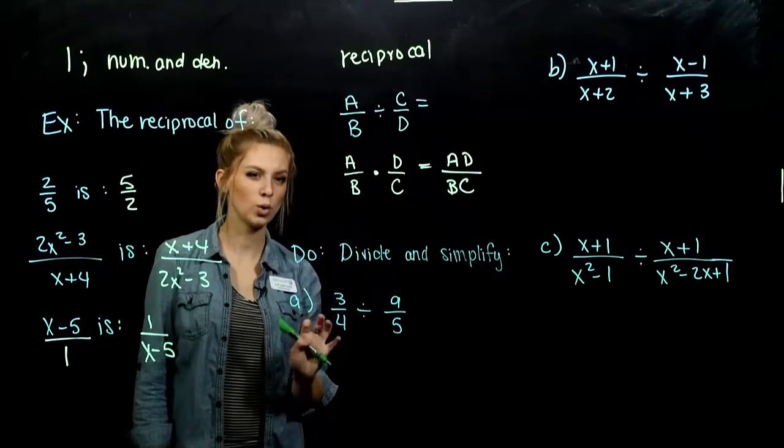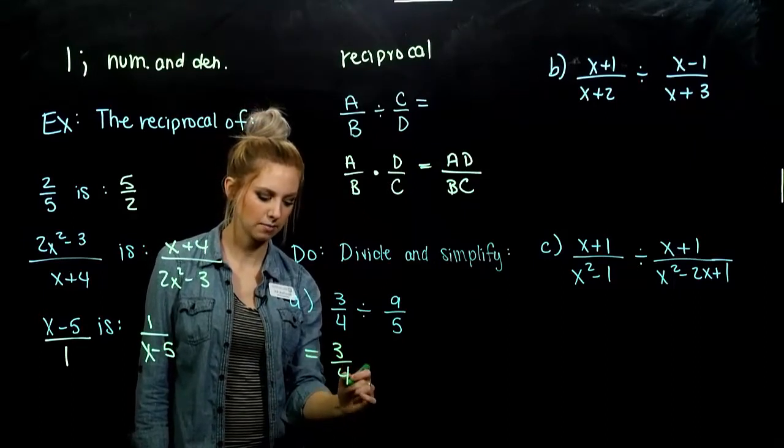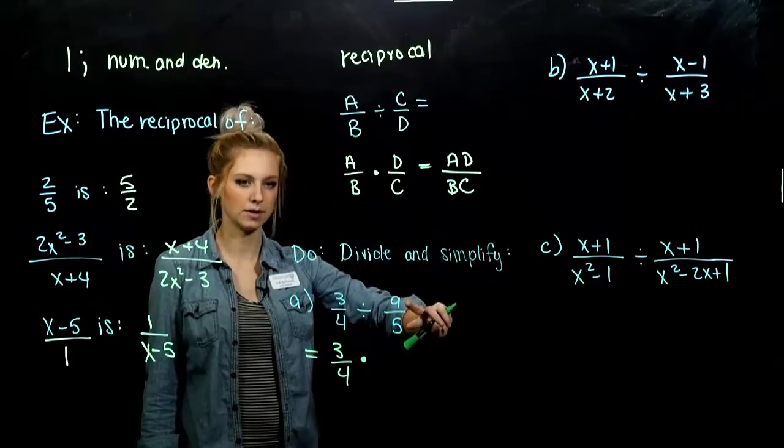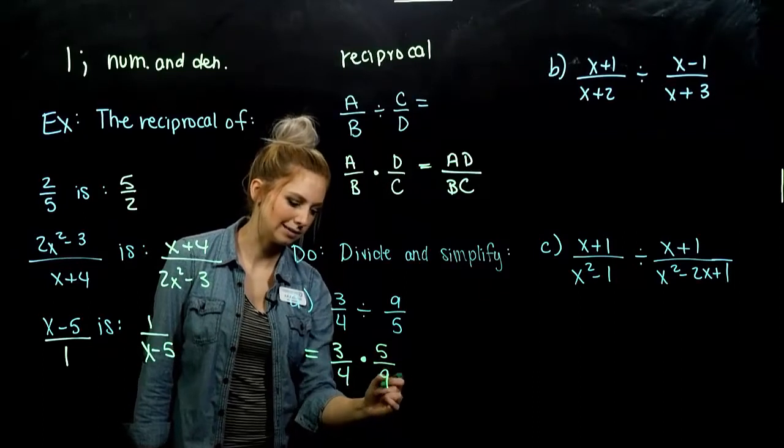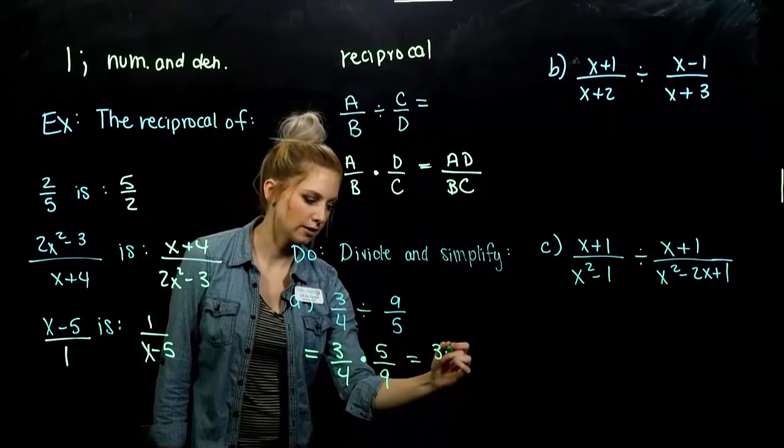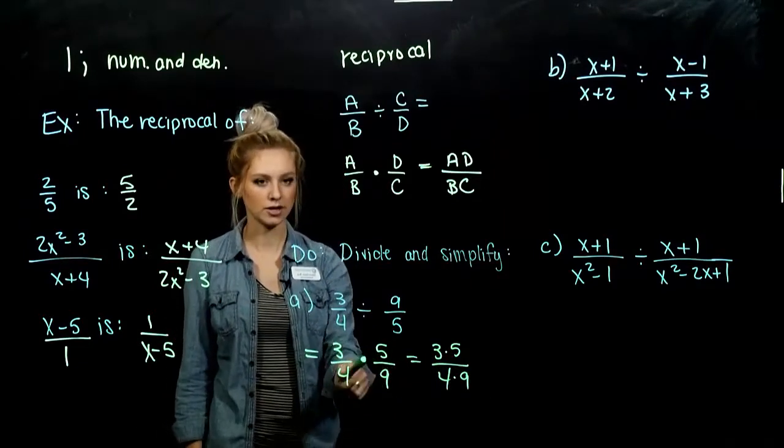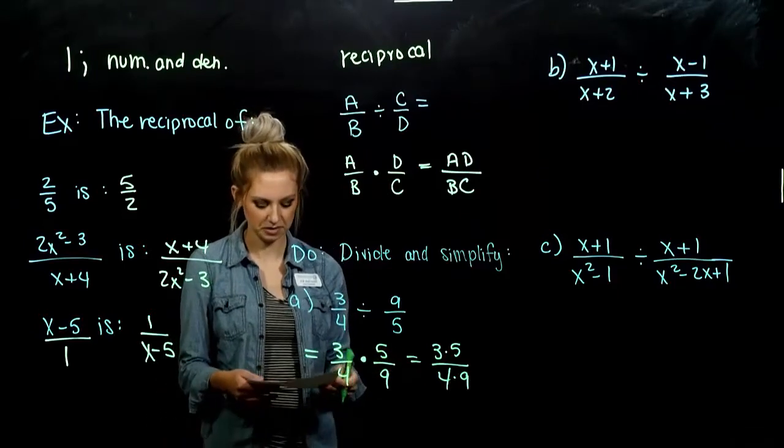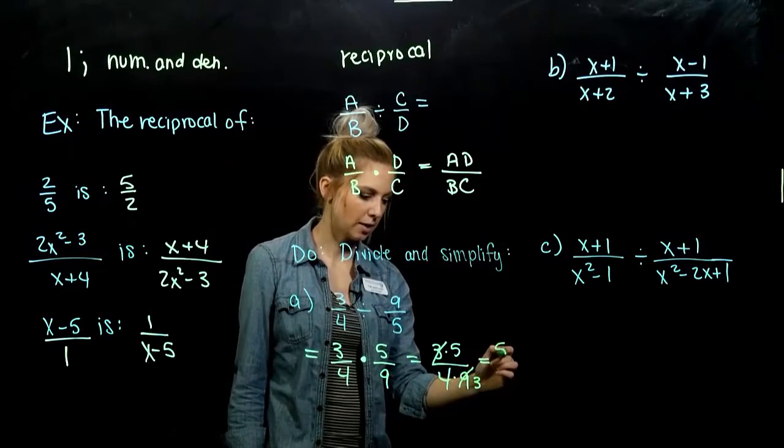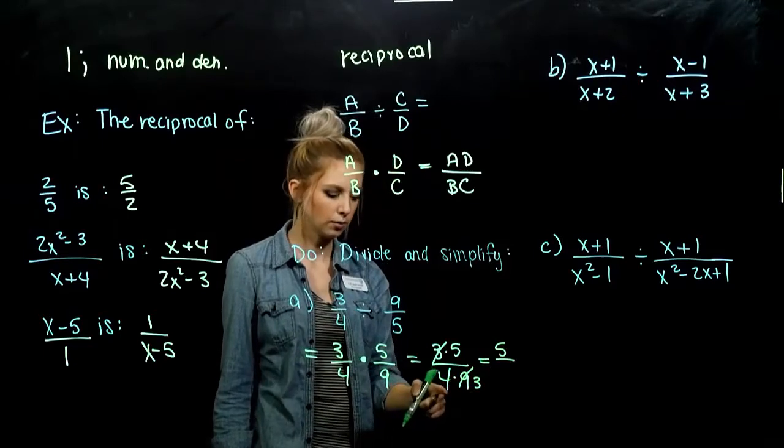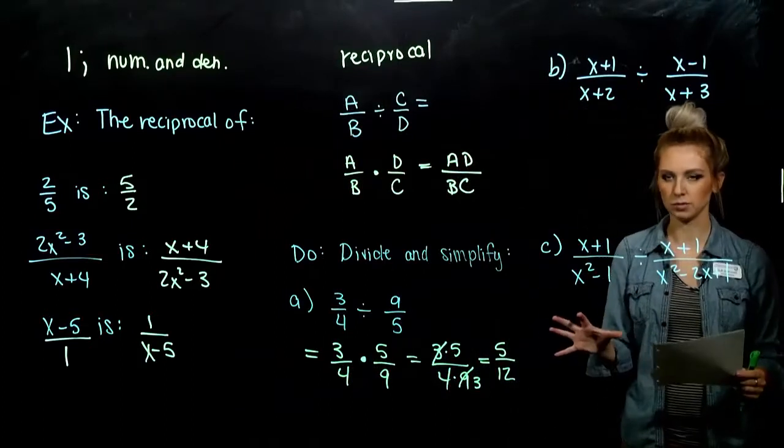So division is really just one extra step from multiplication. We have to flip the second term and change the operation. So let's work through a few simple examples. Division here. Again, I can keep the first one the same. Turn it into multiplication. And I need the reciprocal of the second one. So what is the reciprocal of this guy? 5 over 9. And we can multiply straight across the top. Straight across the bottom. And be able to simplify. We could have even started to simplify before we multiply them together. But what do we get out? 3 goes into 9 three times. So up top I'm left with 5. And down below, 4 times 3 is 12.